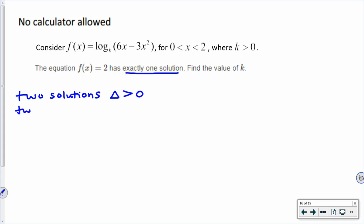If it's two imaginary solutions, two imaginary or no real solutions, some language like that, we're having a discriminant that is less than zero.